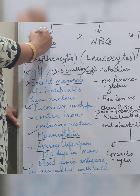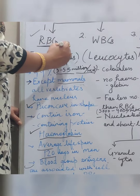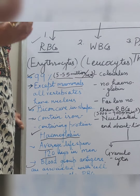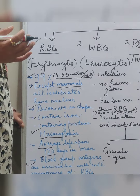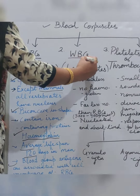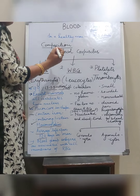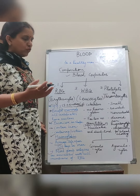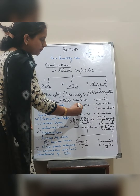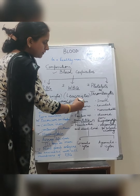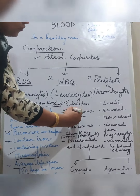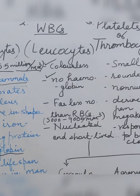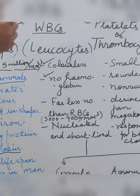RBCs are the main cells which carry oxygen due to the presence of hemoglobin. Now coming to white blood cells — as the name suggests, they have no color because they have no hemoglobin. They are colorless, and there is no other respiratory component either.